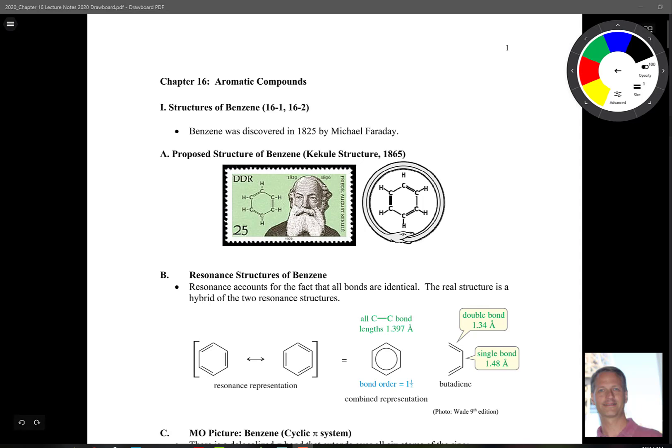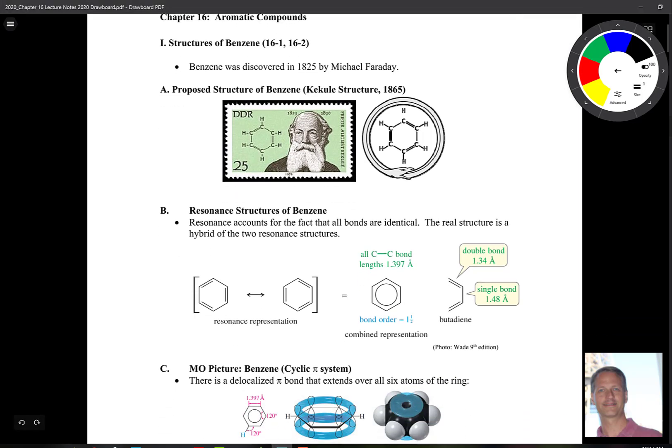Benzene was discovered in 1825 by Michael Faraday. There's a postage stamp here dedicated to him and it's said that he had a dream of a snake coming around and biting its tail for the structure of benzene where we have alternating double bond, single bond, double single, double single as we go around the ring.